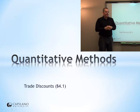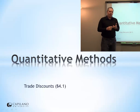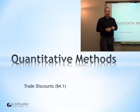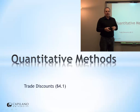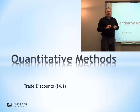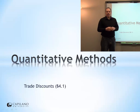Our next section in quantitative methods is trade discounts. We're moving into math and merchandising — the mathematics we're going to use for mostly retail transactions. We're looking at a company buying some product, putting some markup on it, and selling it to a customer. The price they buy it for is less than the price they sell it for, and hopefully they're going to make some money. Math and merchandising covers buying, paying, marking up, overhead costs, and whether we're making money on a transaction. First thing we'll look at is trade discounts.